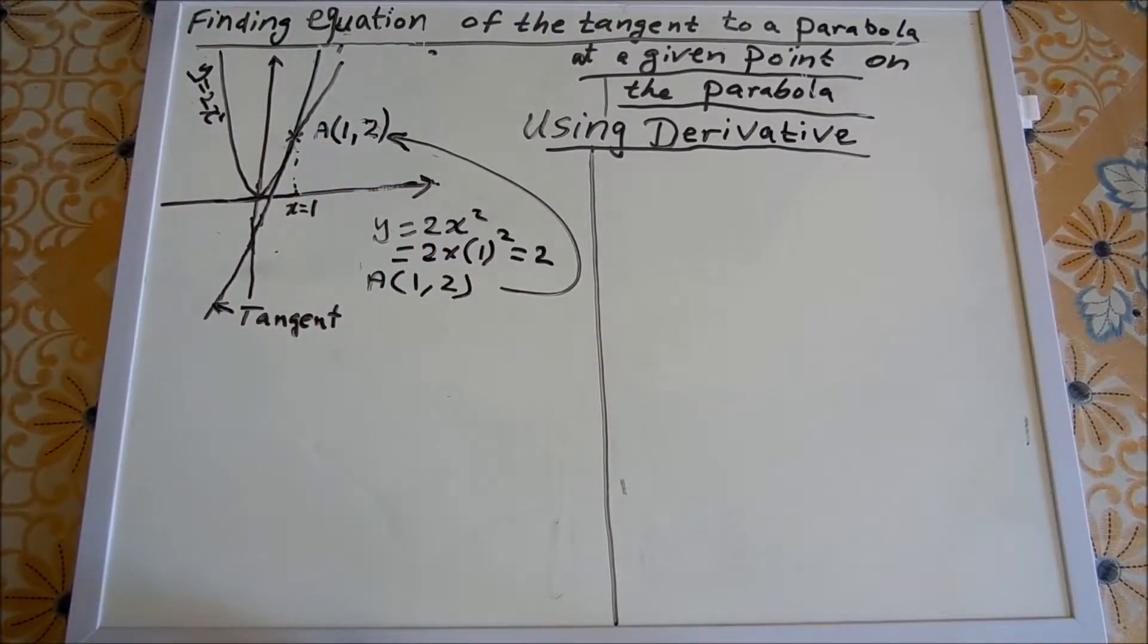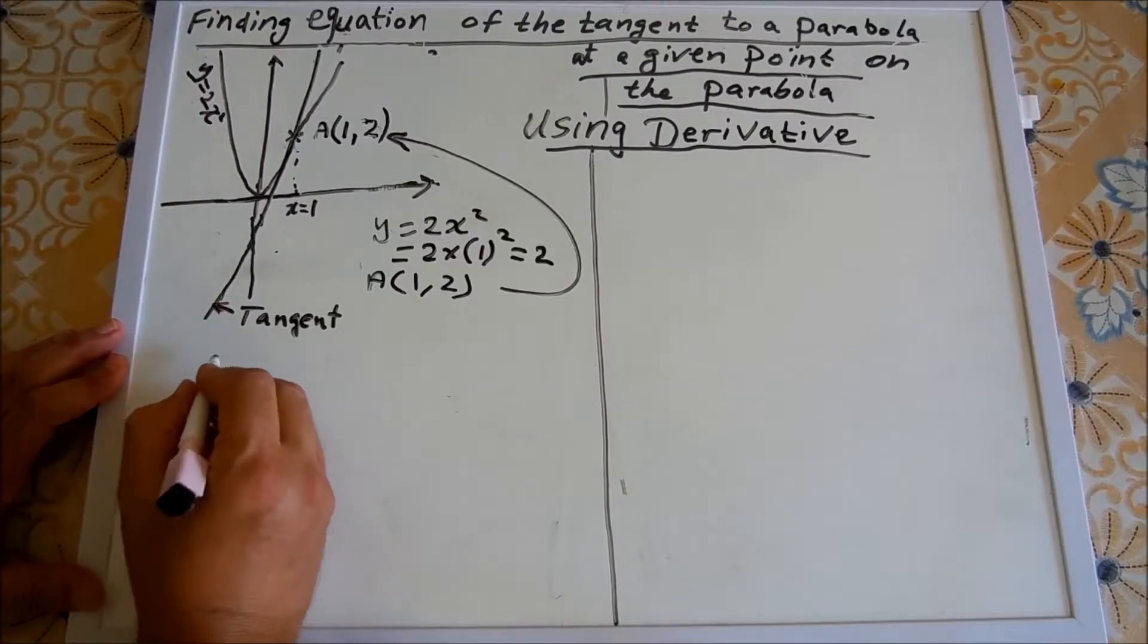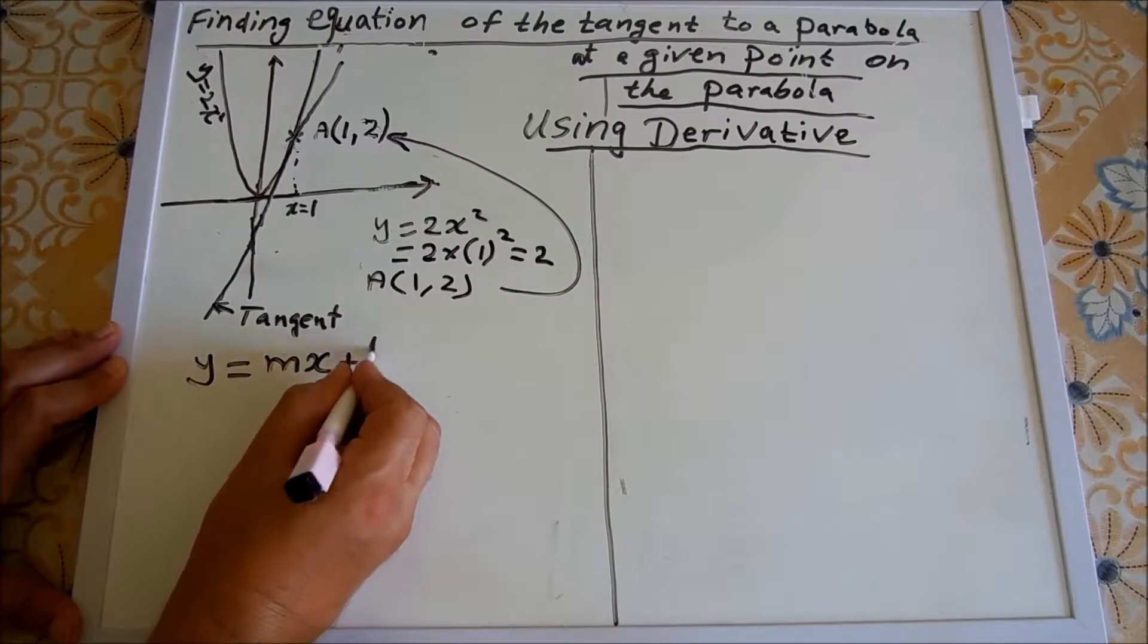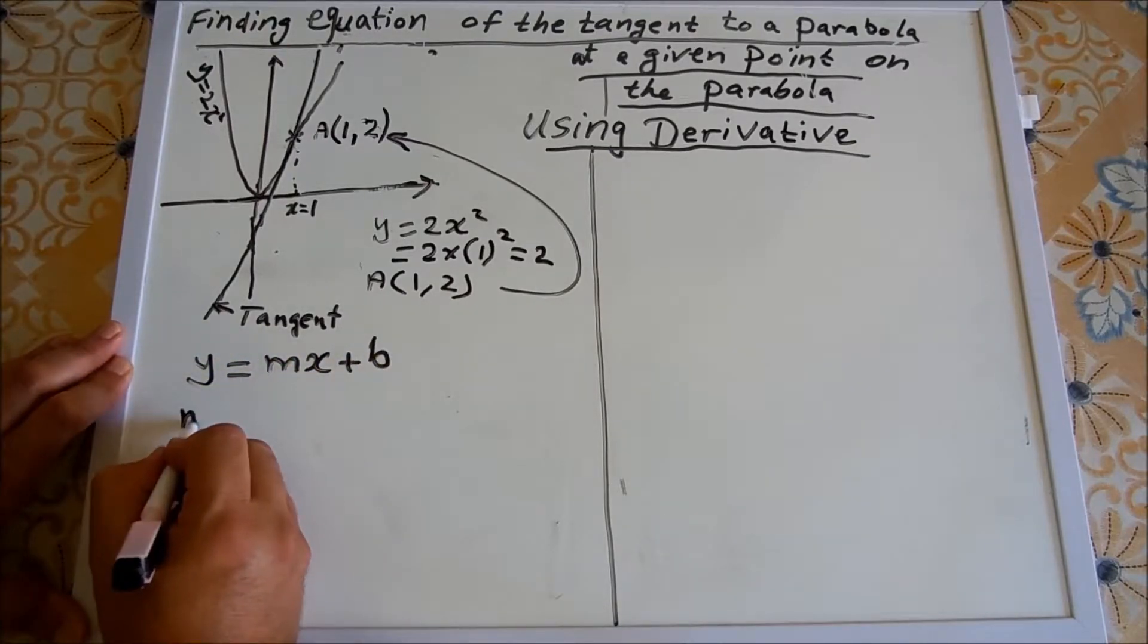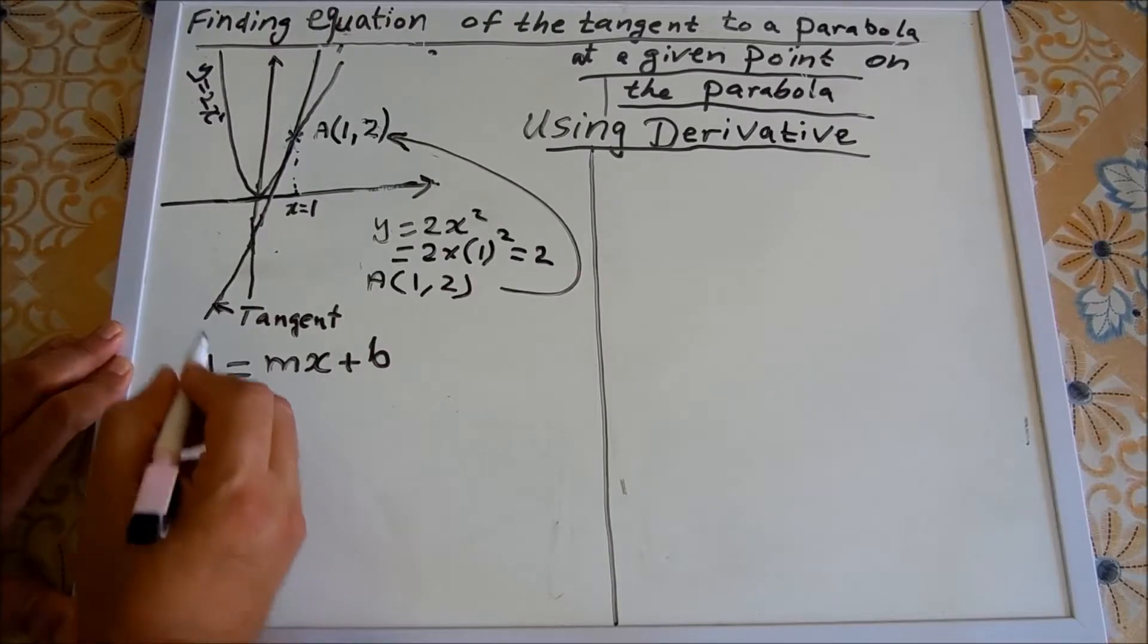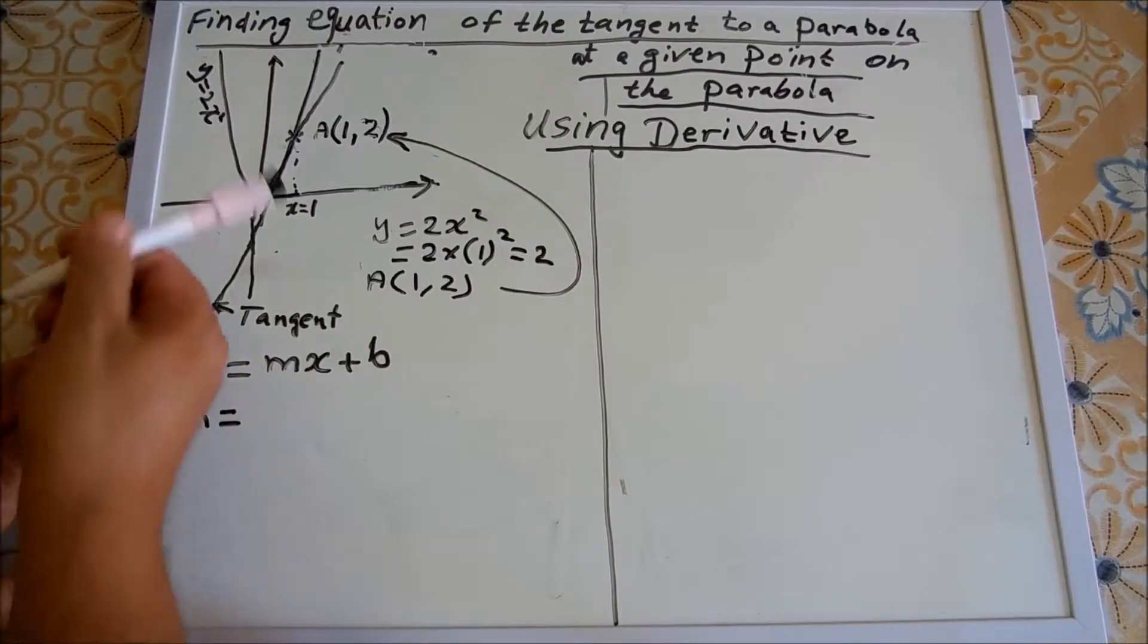The tangent is nothing but a straight line, so its equation is y equals mx plus b. m is the gradient, so the gradient m is nothing but the rate of change at that point.